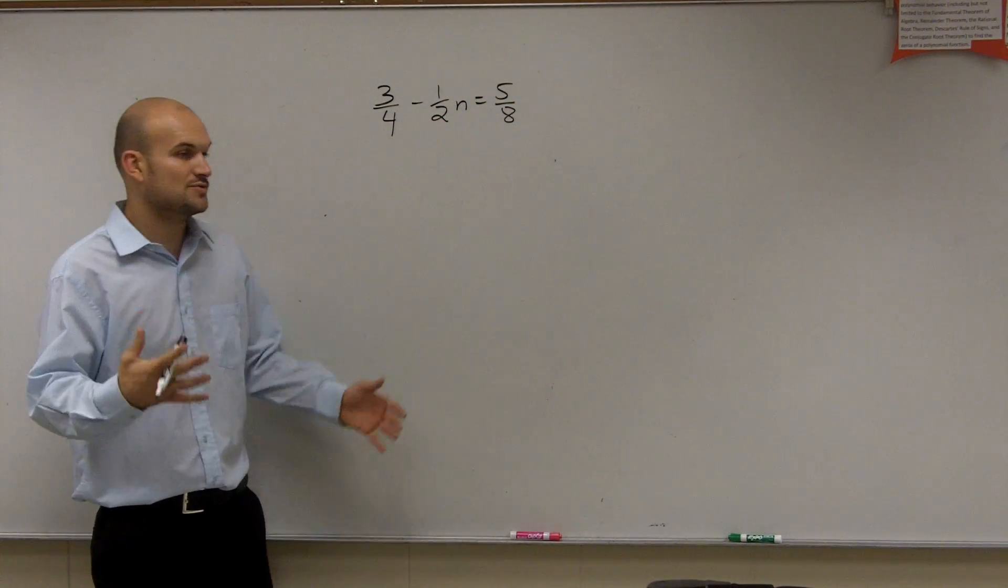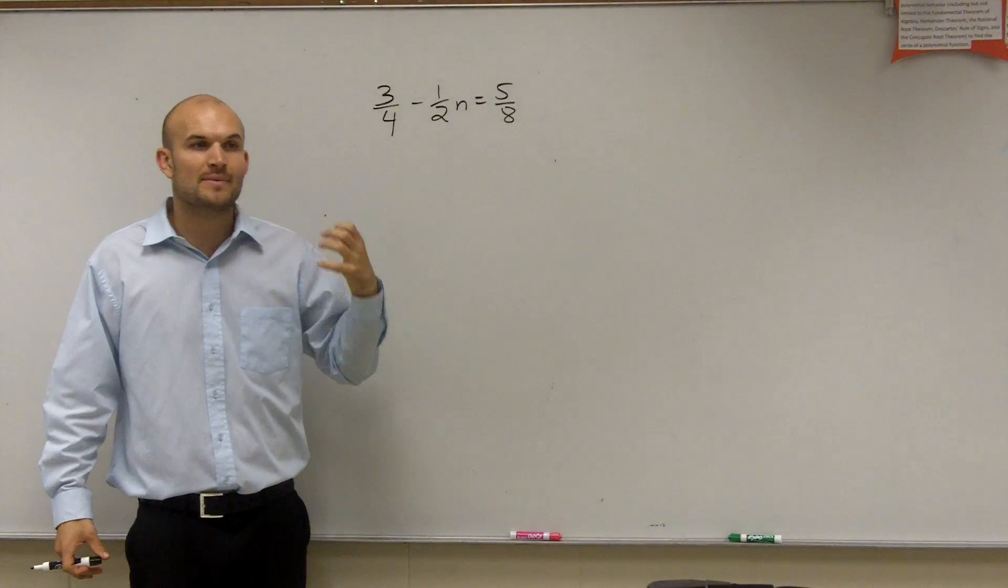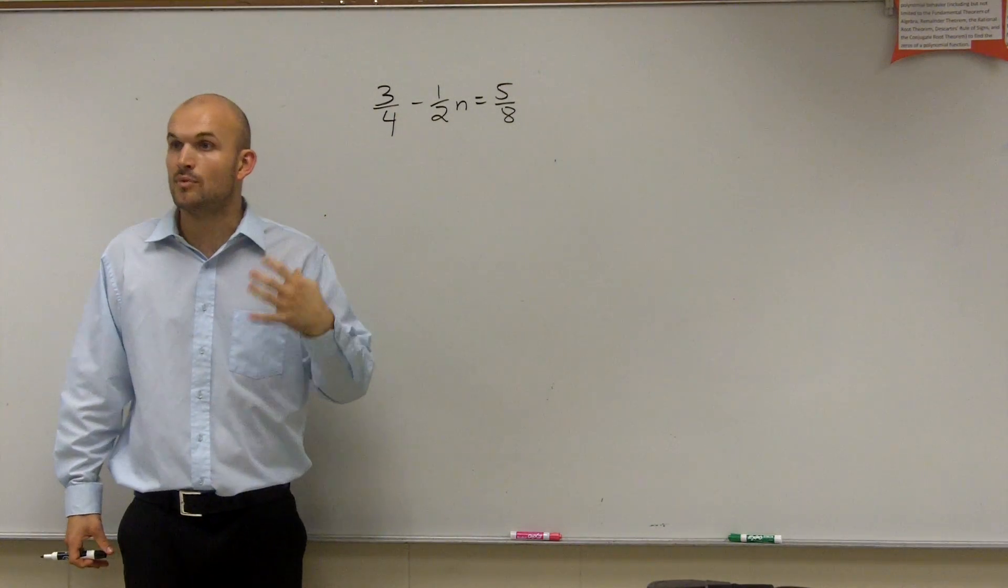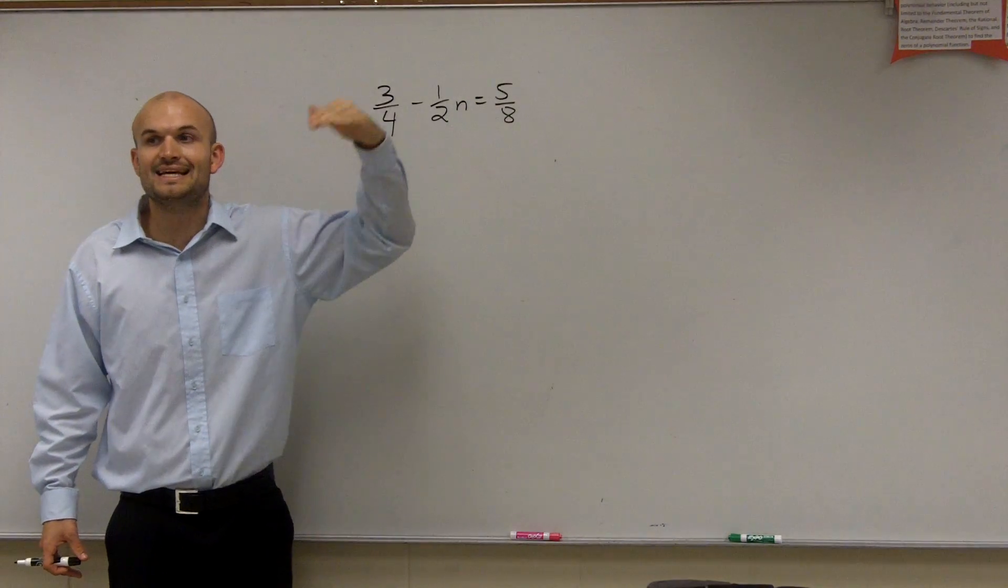The easiest way to get rid of fractions when you have different ones is to find the least common denominator, or the least common multiple. So you look at what is the smallest number that all three of these divide into.